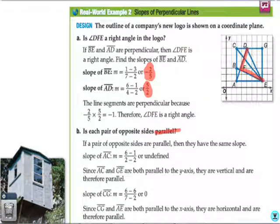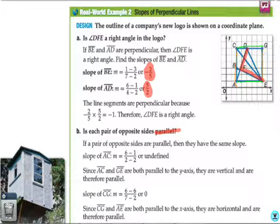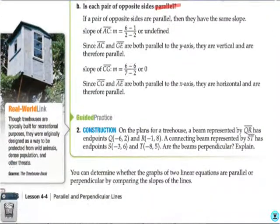Then, they want to know is each opposite side is parallel. Well, this line right here is horizontal and so is this line. So, they have a slope of 0. This line right here is vertical and so is this line. So, they have a slope that's undefined. So, both of those lines are parallel.